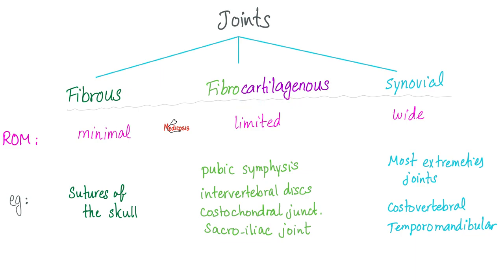There are three types of joints in your body. Fibrous joints give you a minimal range of movement — almost none — such as the sutures in your skull. Fibrocartilaginous joints allow limited movement, such as the symphysis pubis, which during pregnancy and labor can become more lax and widen to increase the pelvic diameter and allow the baby to be born. Synovial joints have the widest range of movement — such as your shoulder joints, which allow flexion, extension, circumduction, and more. Most extremity joints are synovial.